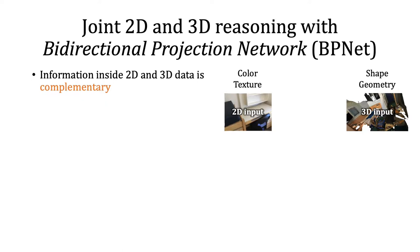From the above examples, we can observe that the information inside 2D and 3D data is well complementary. 2D images provide detailed texture and color information, while 3D data contains strong shape and geometry knowledge.